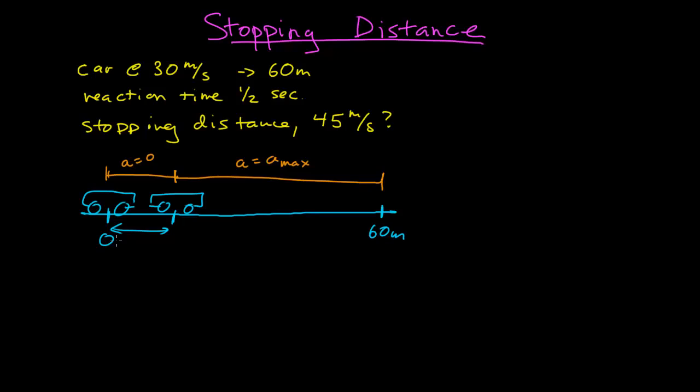Before, when I looked at this, I said I'd like to apply my constant acceleration relationships, except the acceleration is not constant. So I broke it up into two different regions, applied the constant acceleration relationships, and used that to solve the problem. However, let me take a step back and instead of using constant acceleration relationships, use my fundamental definitions. The first thing I'm going to do is, instead of going right away to a mathematical description, look at a graphical representation of what's happening.